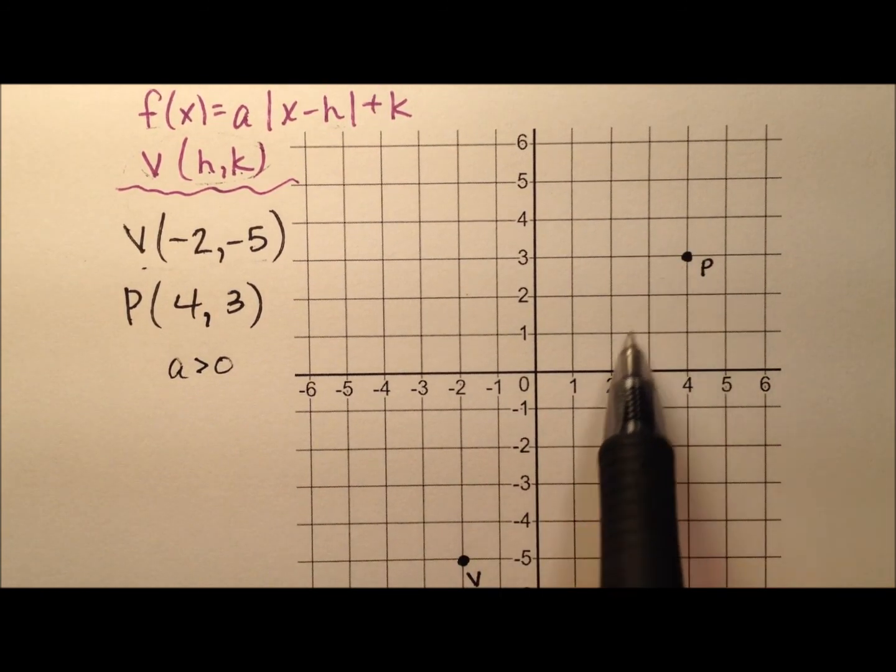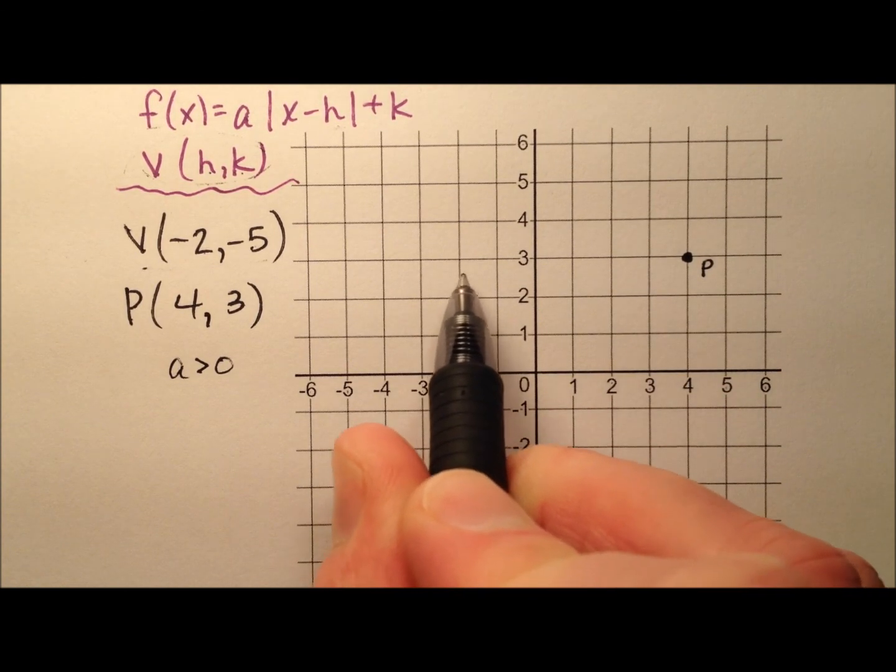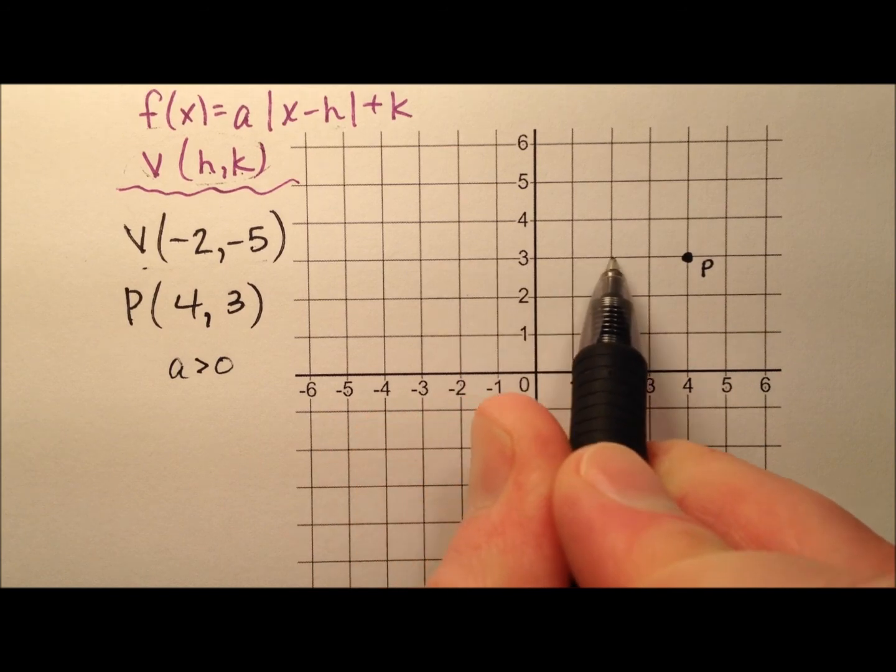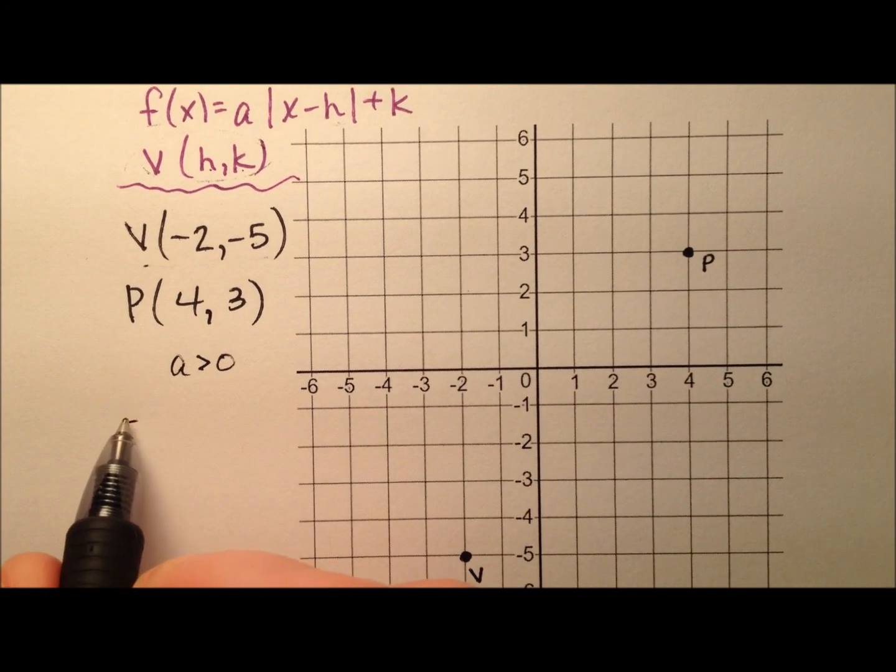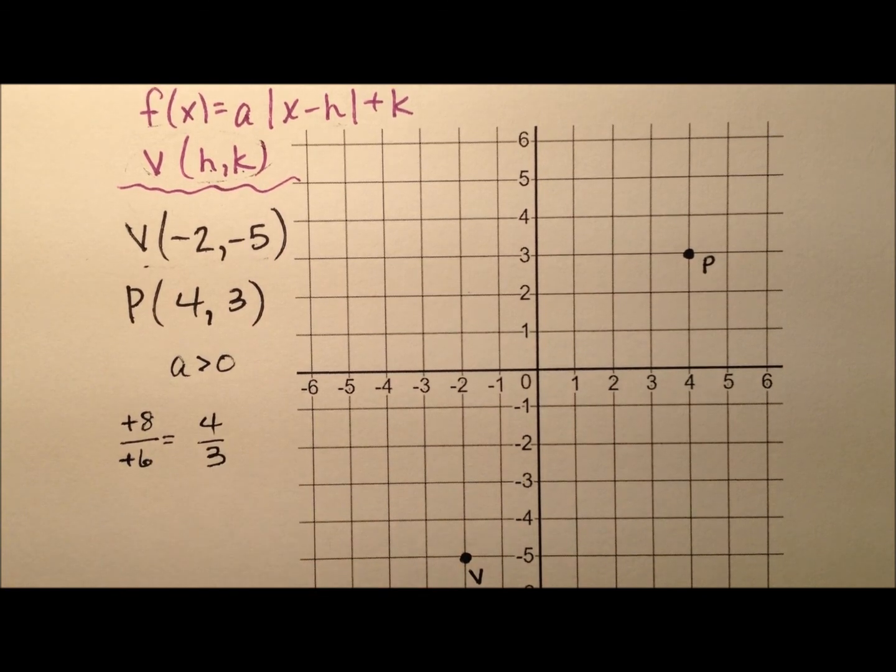And let's go ahead and find this slope then between V and P. Up 8 and over to the right 6, so 8 over 6, which is 4 thirds.